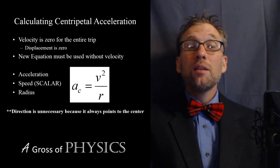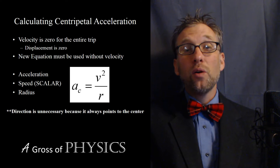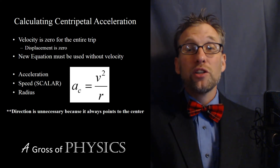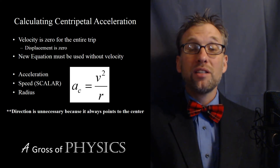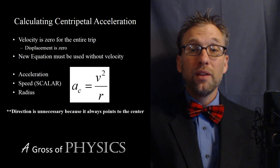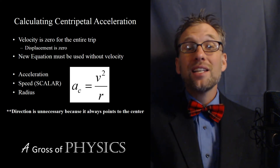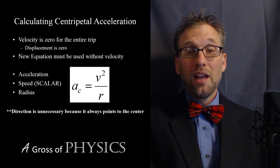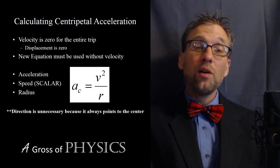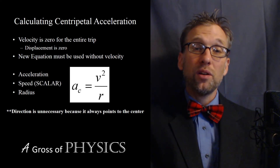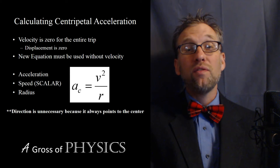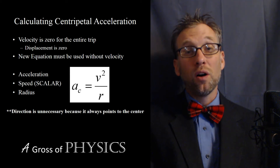For today, the important thing to note is that centripetal acceleration always points to the center of the circle. The velocity is tangent to the circle. And in order to calculate the centripetal acceleration, we're going to have to use v squared over r. Thank you.